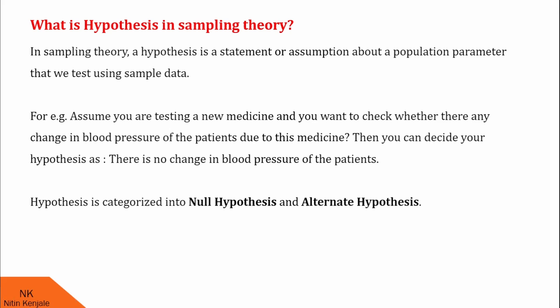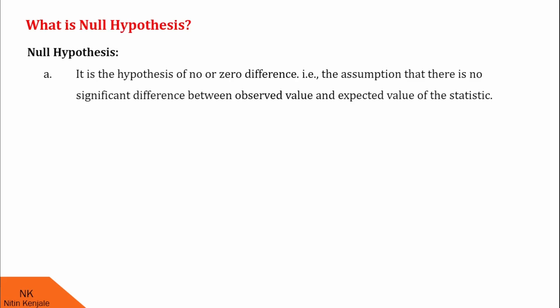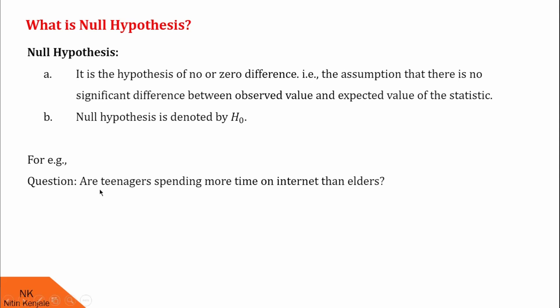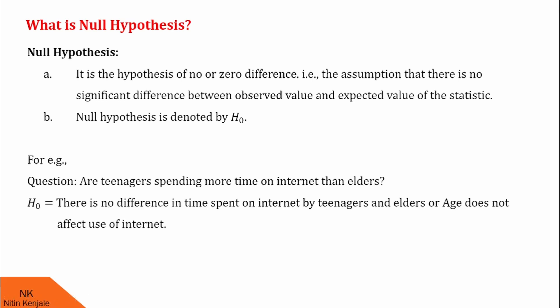Hypothesis is categorized into null hypothesis and alternative hypothesis. First, null hypothesis. It is the hypothesis of no or zero difference — that is, the assumption that there is no significant difference between the observed value and expected value of the statistic. Null hypothesis is usually denoted by H0. For example, if your question is: are teenagers spending more time on internet than elders? Then you can decide your H0 as: there is no difference in time spent on internet by teenagers and elders, or age does not affect the use of internet. H0 indicates there is no difference — it is the hypothesis of no or zero difference.